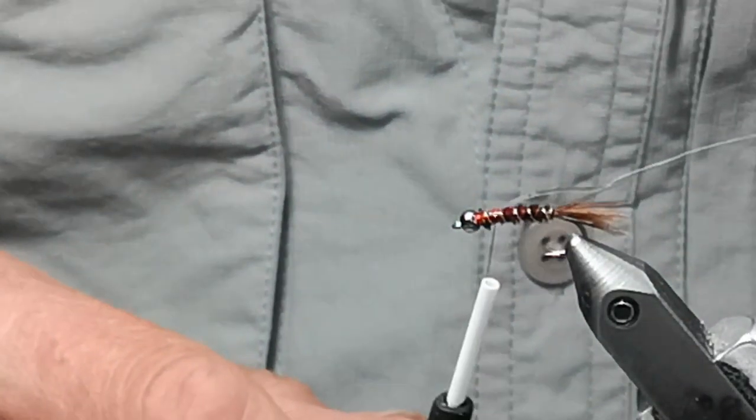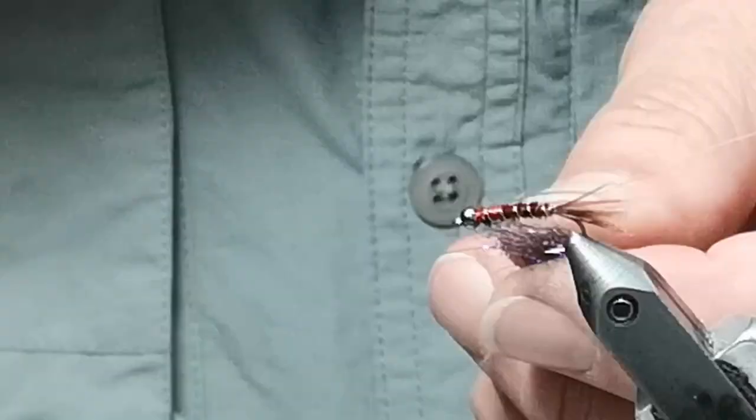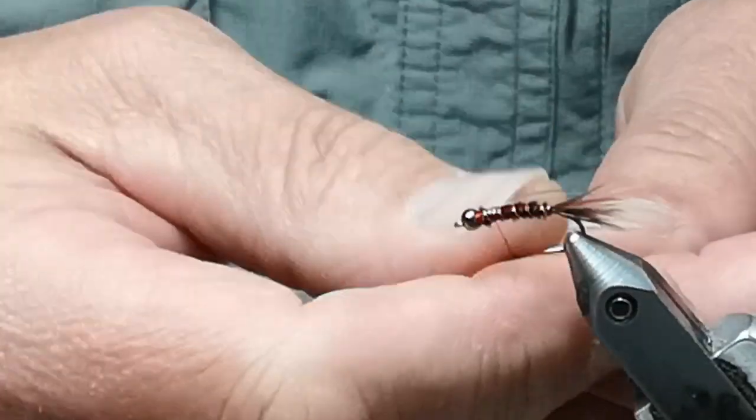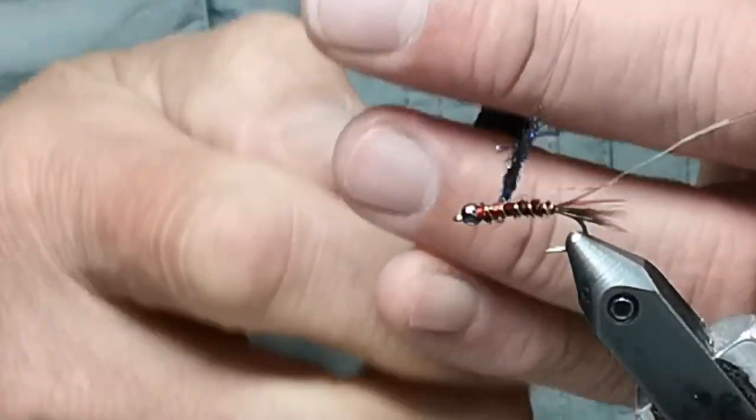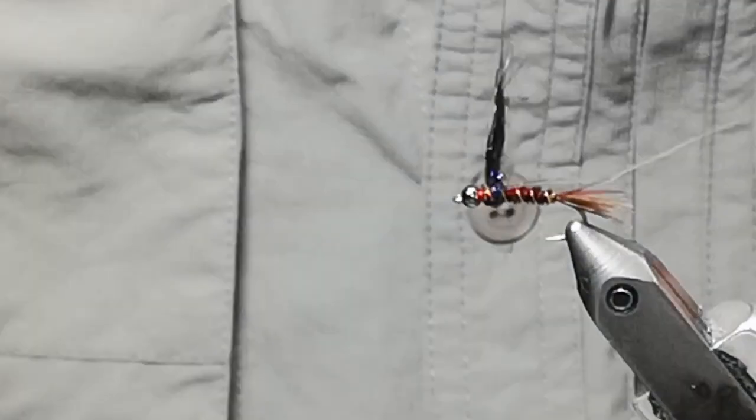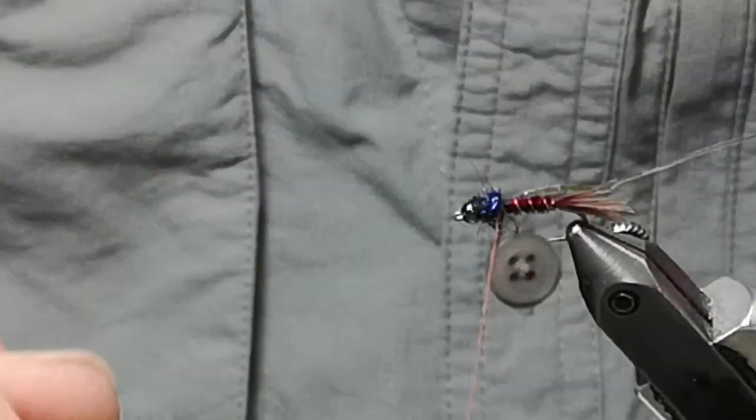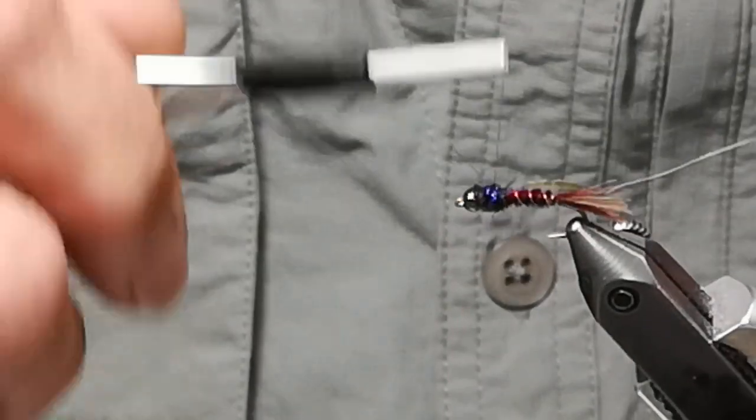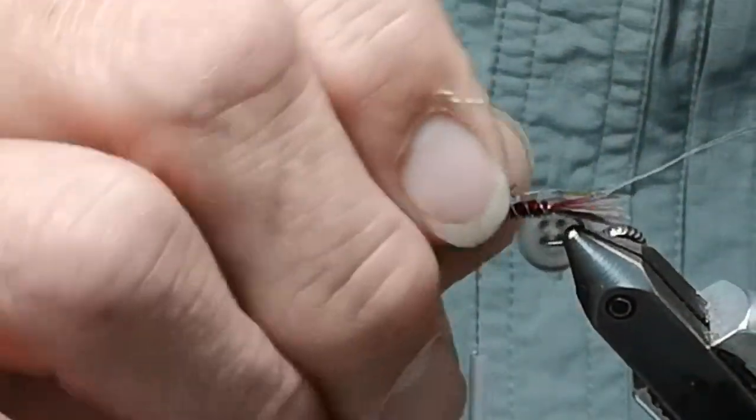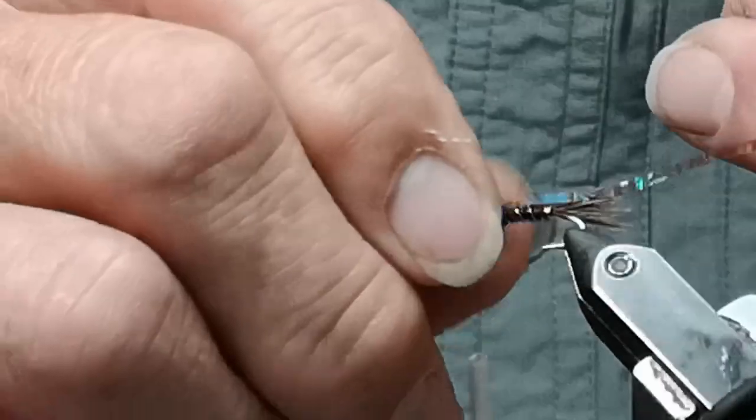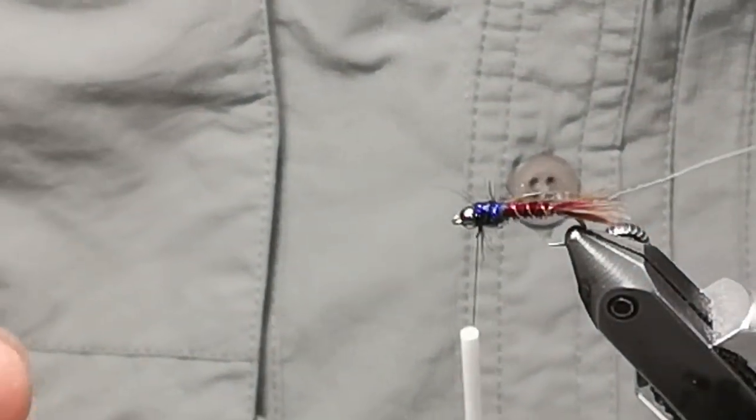The next product is going to be my black prism. I'm going to wrap that onto the thread nice and tight, wrap that around the thorax. Because I'm using a fine 6/0 thread, I can actually go in and out of the dubbing and secure it a little tighter. That'll hold it in place.